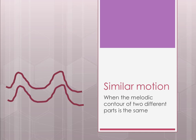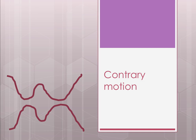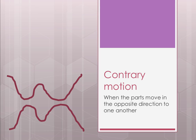Contrary motion is the opposite: it means when two parts move in opposite directions to one another. One part starts high and moves low while the other starts low and moves high — you can see them moving together and apart, together and apart. To be contrary with someone is to have the opposite opinion, which is a helpful way to remember it.